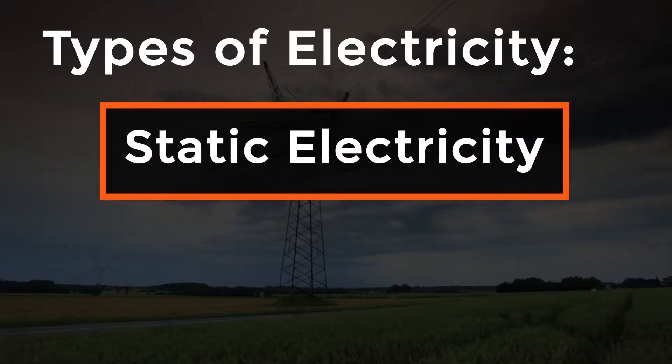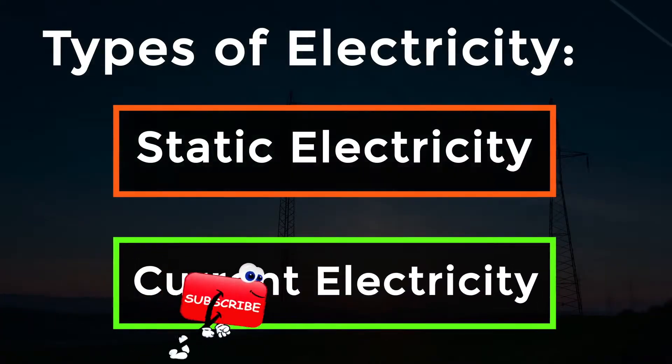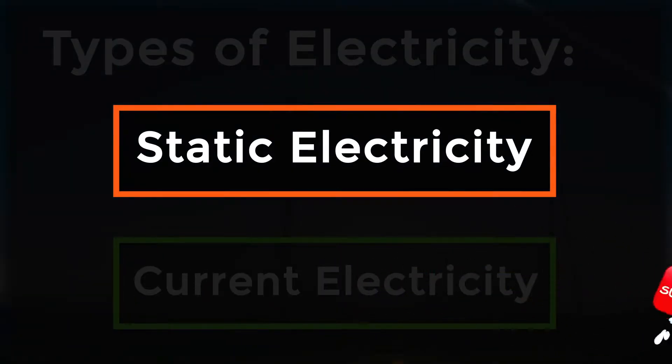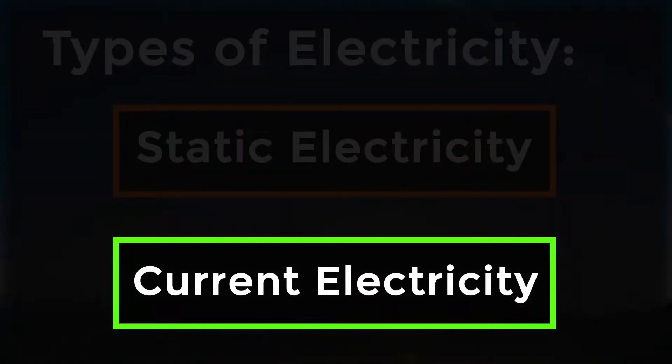Types of electricity: static and current electricity. Static electricity charges are at rest, whereas current electricity charges are moving.